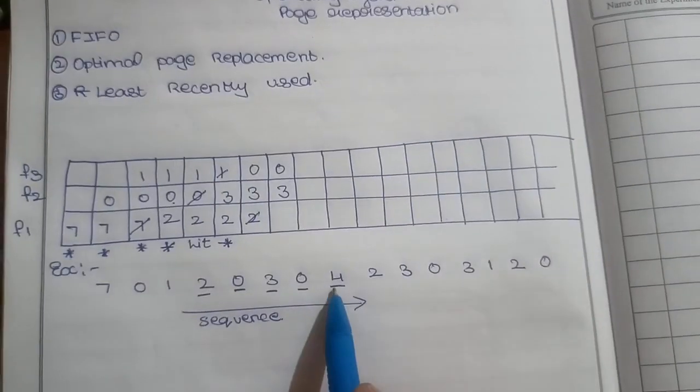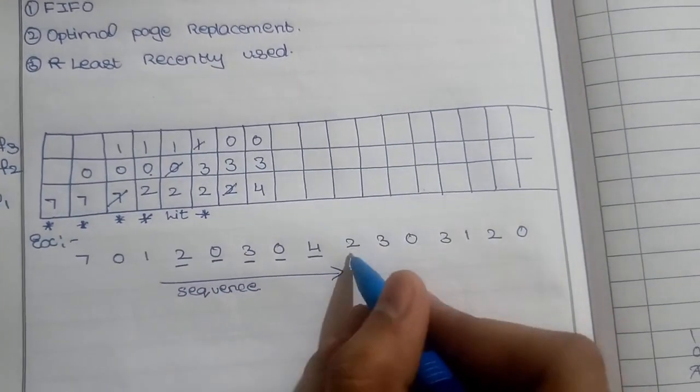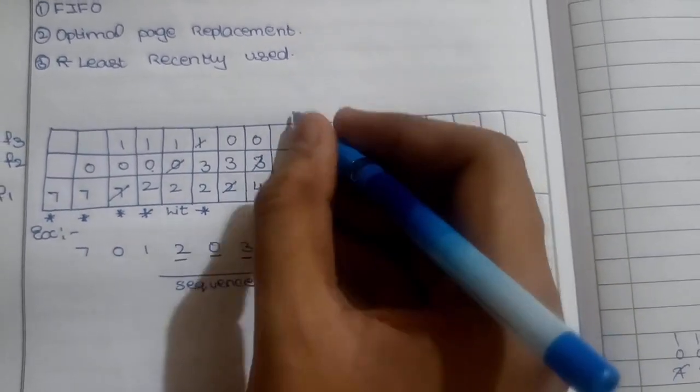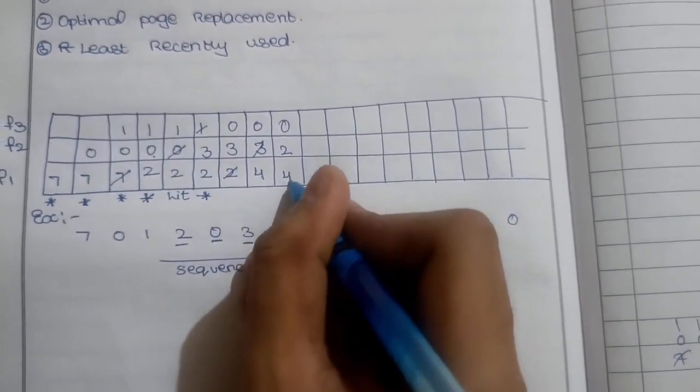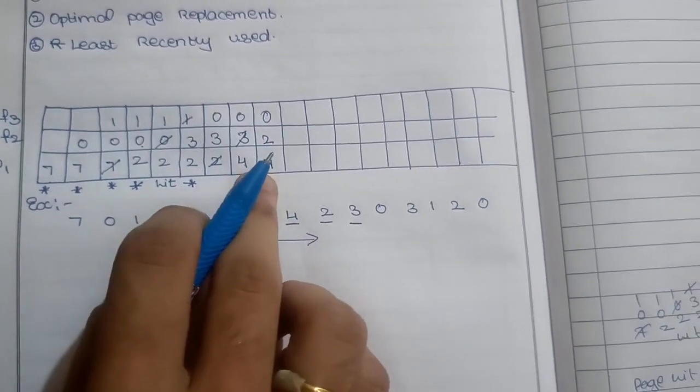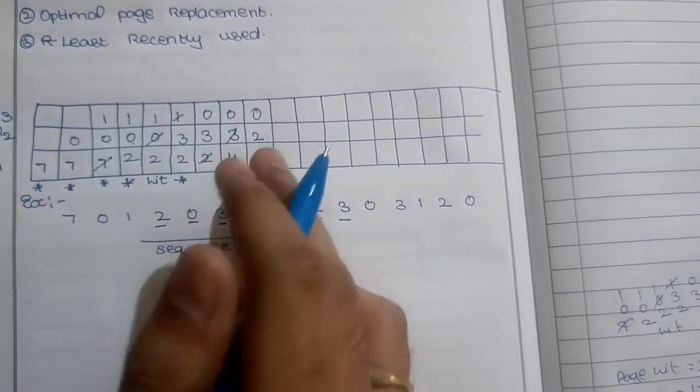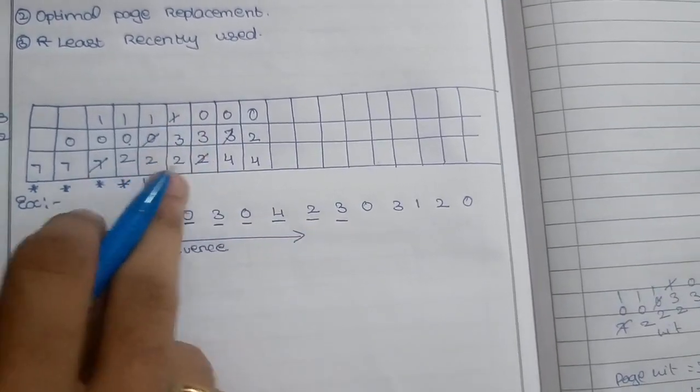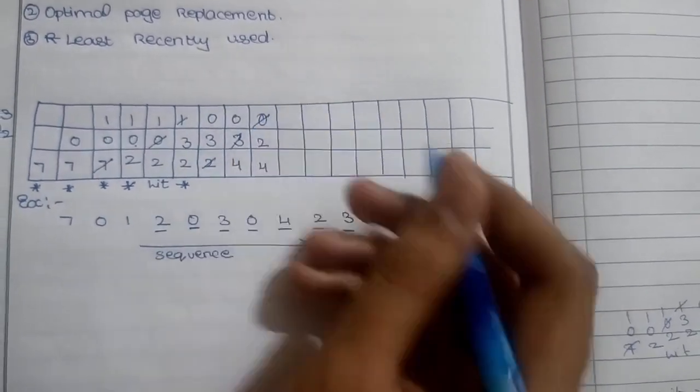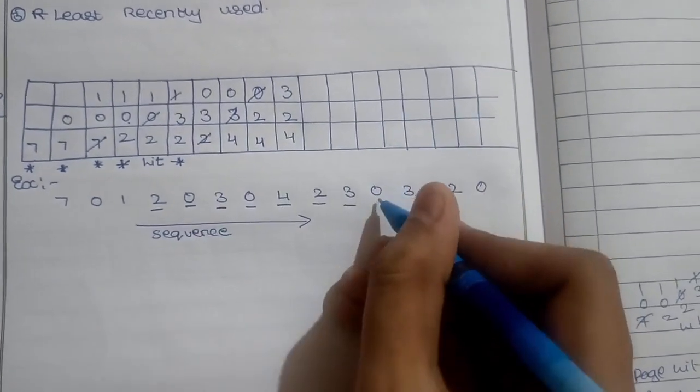I'll put 4 in place of 2, making it 0, 2, 4. Next process, when 2 comes I need to upload it. Since 3 repeats more times, I'll delete 3 and put 2, making it 0, 2, 4. Next, 4 repeats twice and 0 repeats thrice, so I'll replace 0 with 3, making it 3, 2, 4.